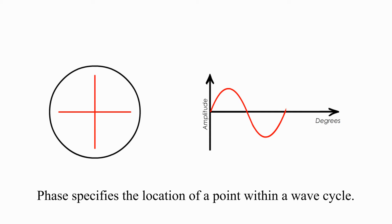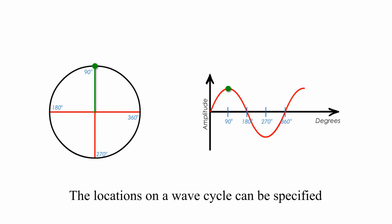Phase specifies the location of a point within a wave cycle. The locations on a wave cycle can be specified as an angle in either radians or degrees, as well as in fractions of a cycle.